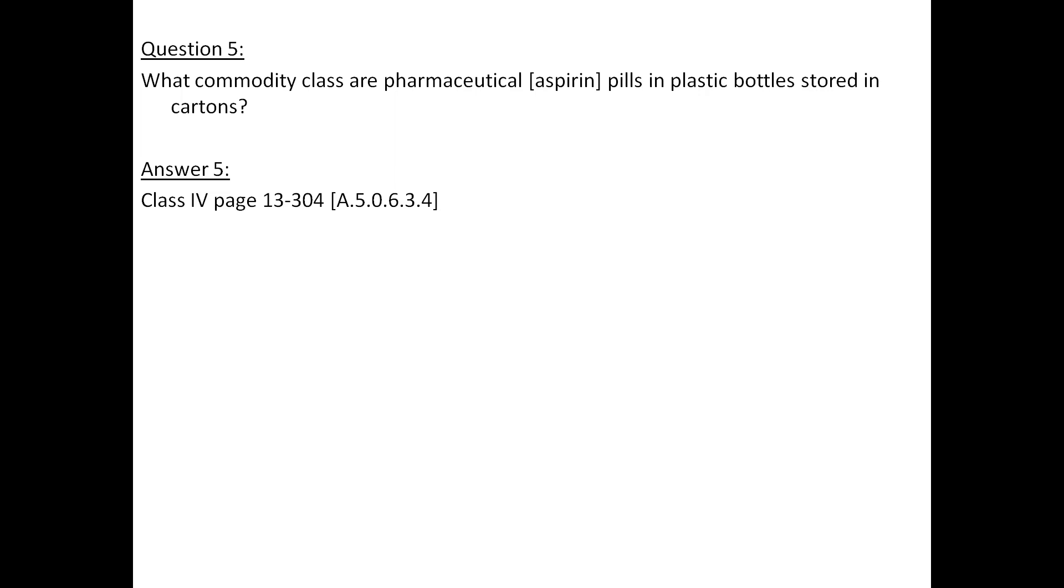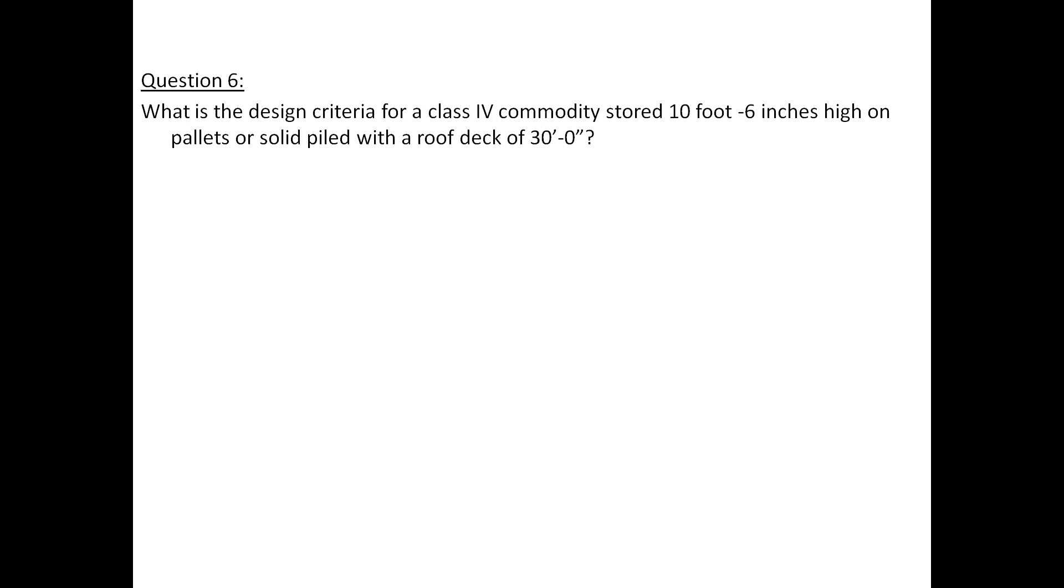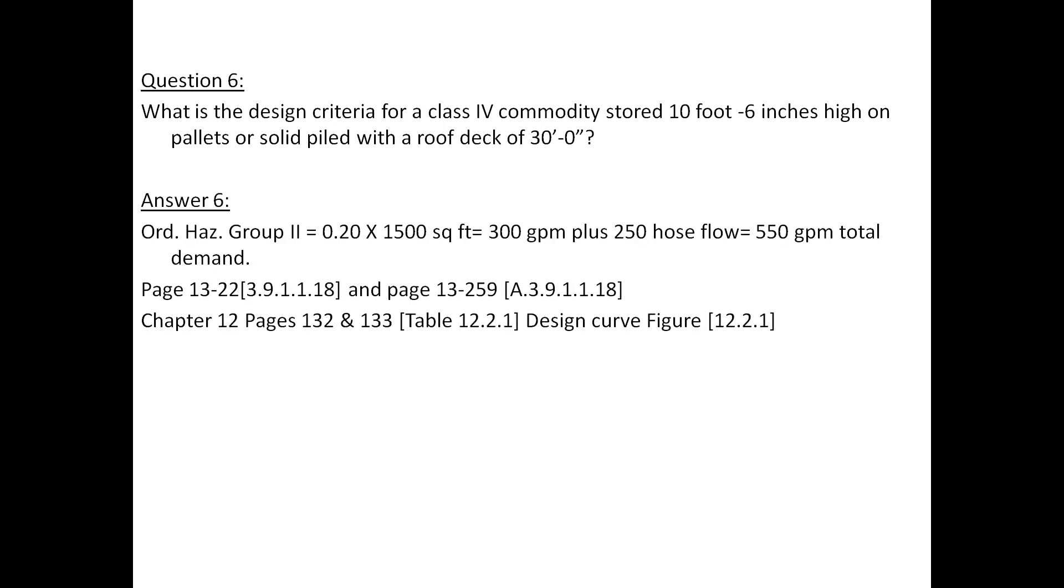Question number 6: What is the design criteria for a class 4 commodity stored 10 foot 6 inches high on pallets or solid piled with a roof deck of 30 feet? The answer to question number 6 is ordinary hazard group 2 which equals 0.20 times 1500 square feet equals 300 gallons per minute plus 250 for hose flow which would give us a total of 550 GPM total demand. Reference page 13-22 and page 13-259.